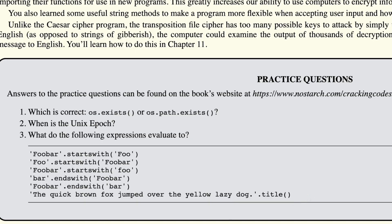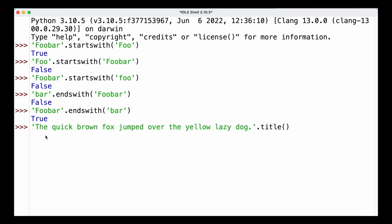Finally we are using the title function. We have the string 'the quick brown fox jumped over the yellow lazy dog' and call .title() on it. We saw before that we can use lower and upper to turn a string into lowercase or uppercase — there's also a third option: title case. The title function capitalizes the first character of each word and turns all other characters in that word to lowercase. So we should see T, Q, B, F, etc. — the first character of each word capitalized. Let's check in our interactive shell — and indeed the first character of each word is capitalized and all others are lowercase.